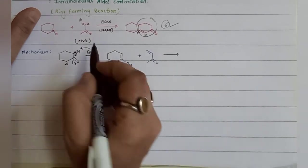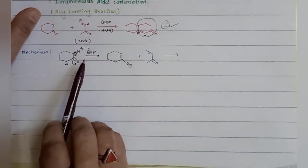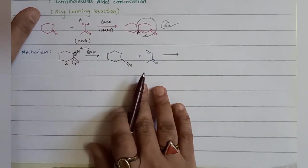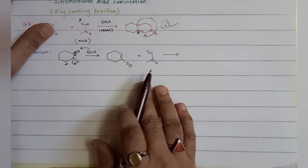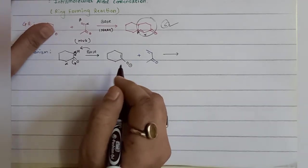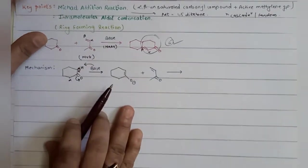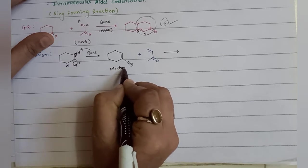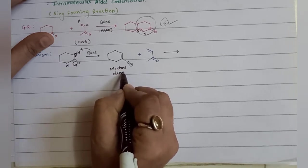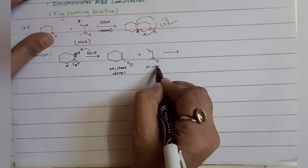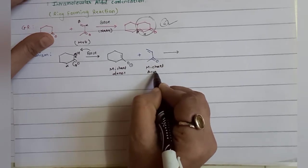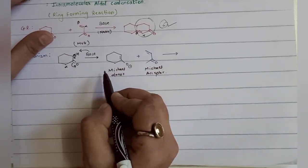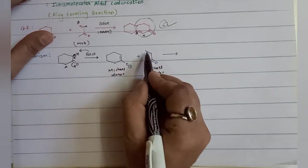Once you get the enolate, your second reactant - methyl vinyl ketone - comes in immediately. We call this conjugate addition, or Michael addition. This enolate product acts as your Michael donor, and the methyl vinyl ketone will be your Michael acceptor. Conjugate addition will be taking place across this double bond.